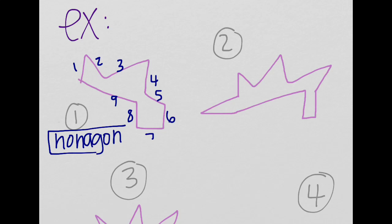Nonagon. And the way I like to remember nonagon is non starts with nine, like they both have N. So that's helpful. Whenever a shape has nine sides, it's a nonagon.